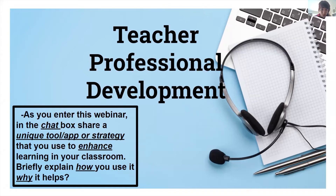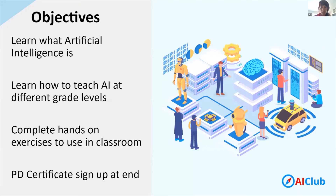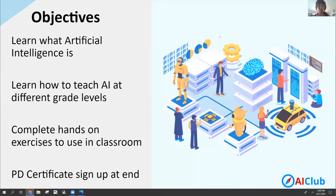I'm going to run through the objectives for today. The objectives for this session are: number one, we're going to learn what artificial intelligence is; we're going to learn how to teach AI at different grade levels; during this professional development, you'll actually get to complete some hands-on exercises that we utilize in our classrooms; and at the end, we'll offer a PD certificate where you can enter your information online and get your PGP points for attending this webinar today.